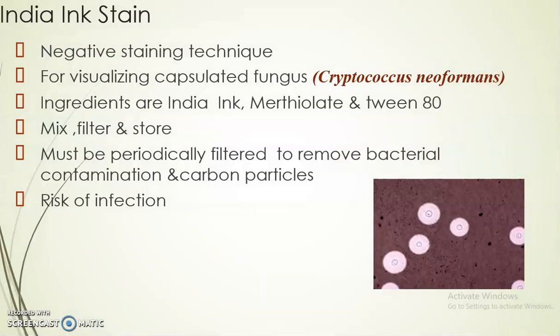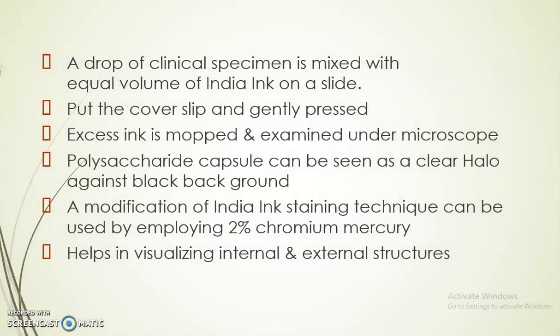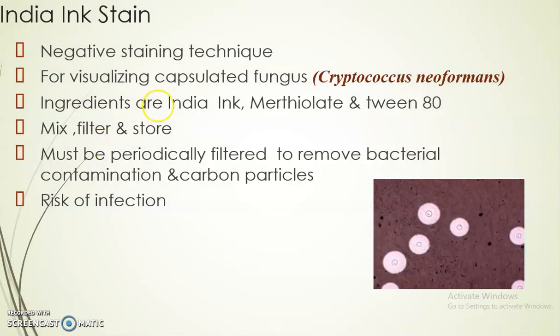The second stain is India ink stain. It is a negative staining technique widely used for visualizing encapsulated fungus. The encapsulated yeast pathogenic to human beings is Cryptococcus neoformans, which can be visualized using India ink stain. Ingredients are India ink, merthiolate, and Tween 80. The ingredients are mixed, filtered, and stored; they must be periodically filtered to remove bacterial contamination and carbon particles. There is a risk of infection as no heating or disinfectant is added. A drop of clinical specimen is mixed with an equal volume of India ink on a slide, a coverslip is placed and gently pressed, excess ink is removed, and it is examined under the microscope. We can see the polysaccharide capsule as a clear halo against a black background.